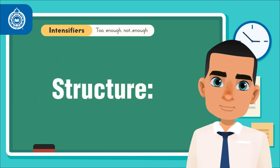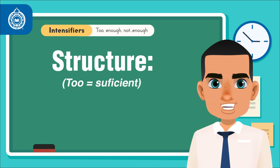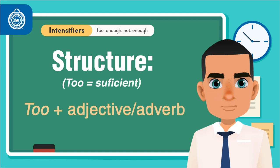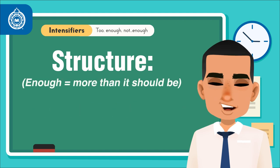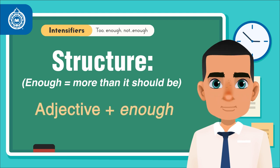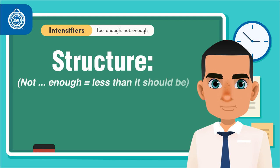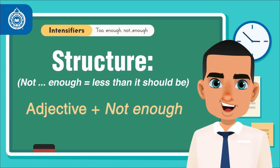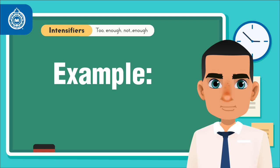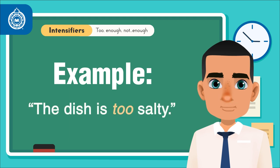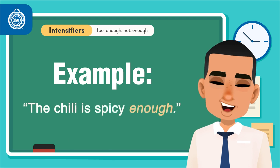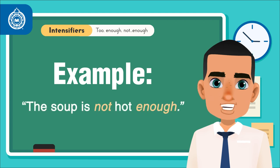The structure is as follows. Too: its structure is too plus adjective or adverb, meaning more than it should be. Enough: its structure is adjective plus enough. Not enough: its structure is adjective plus not enough, meaning less than it should be. Here are some examples: The dish is too salty. The chili is spicy enough. The soup is not hot enough.